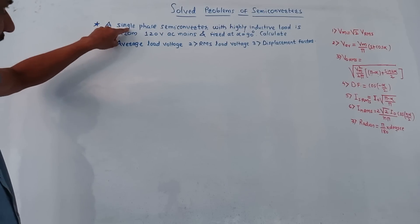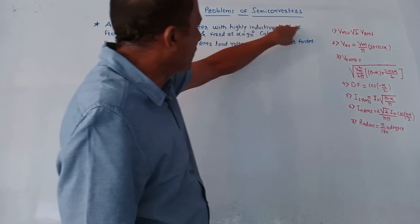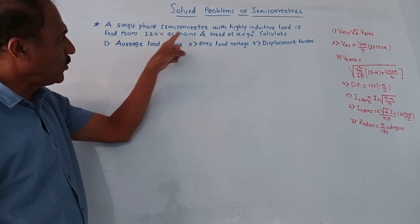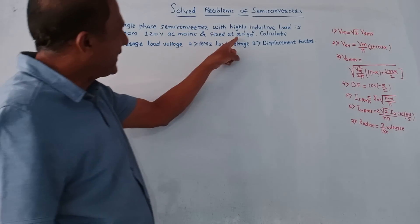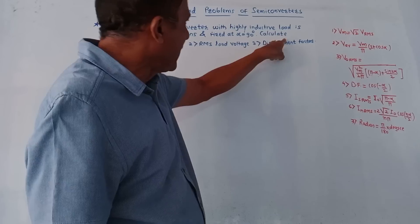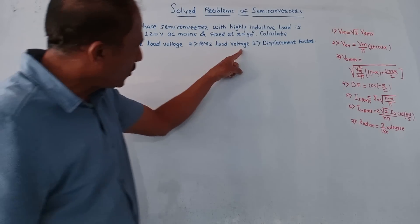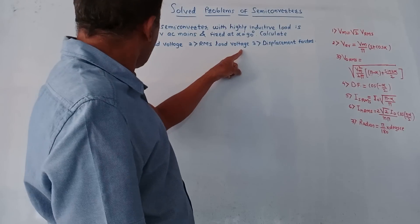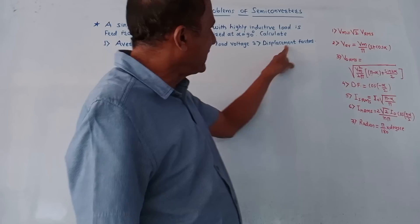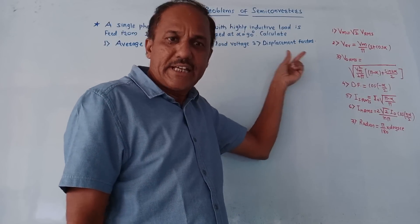The first problem: a single-phase semi-converter with a highly inductive load is fed from 120 volt AC mains and fired at angle alpha equal to 90 degrees. Calculate: first part — average load voltage; second part — RMS load voltage; third part — displacement factor, abbreviated as DF.